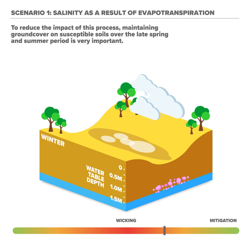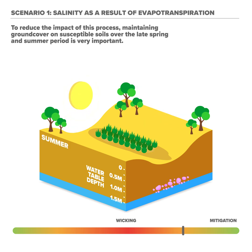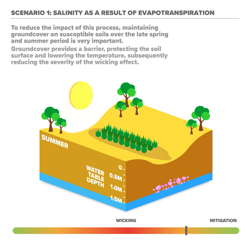To reduce the impact of this process, maintaining ground cover on susceptible soils over the late spring and summer period is very important. Ground cover provides a barrier protecting the soil surface and lowering the temperature, subsequently reducing the severity of the wicking effect.